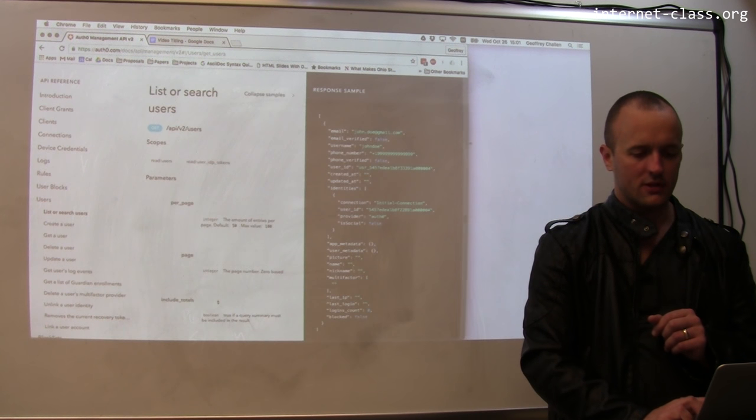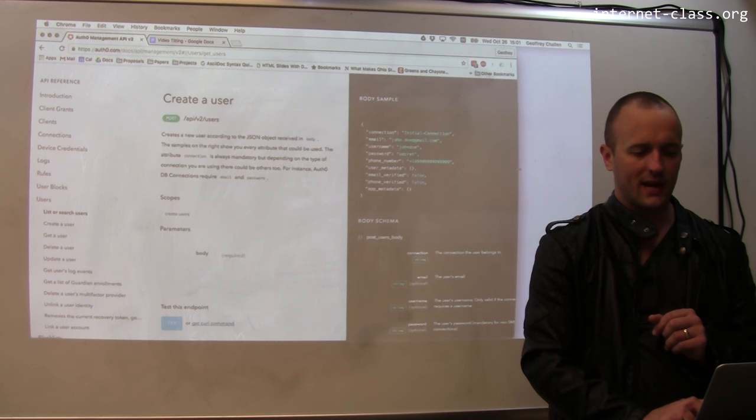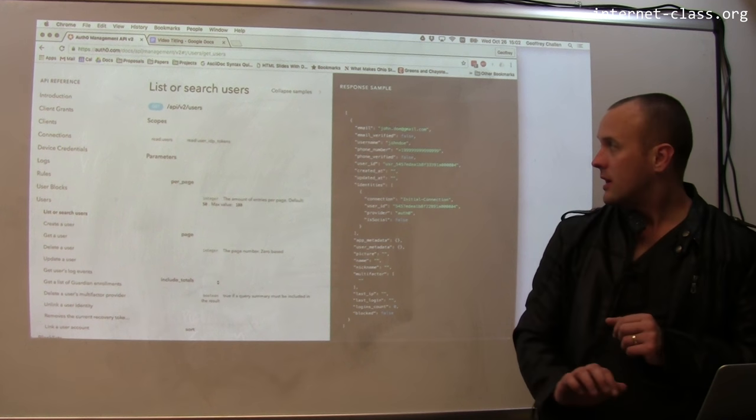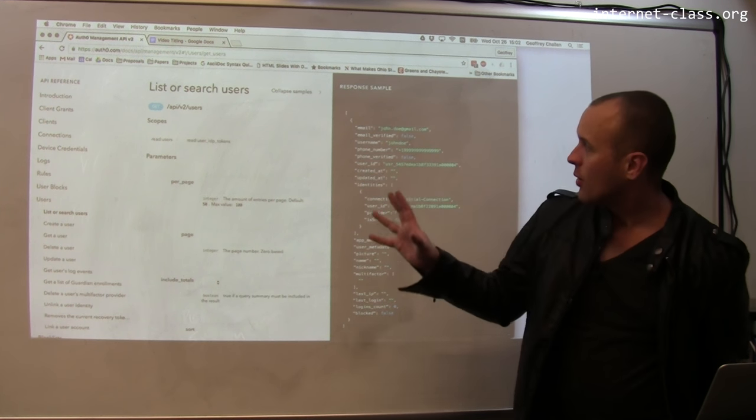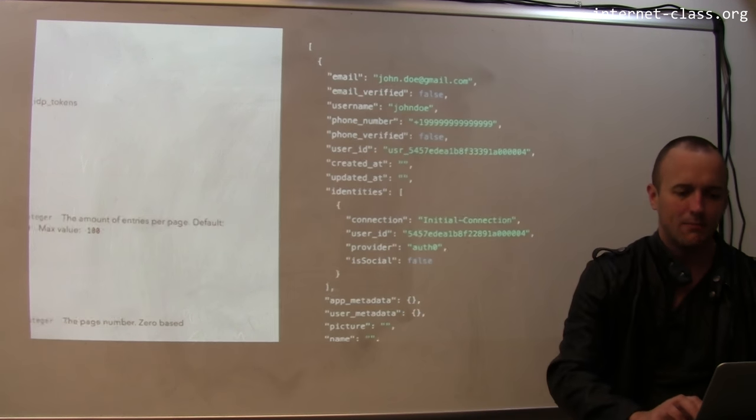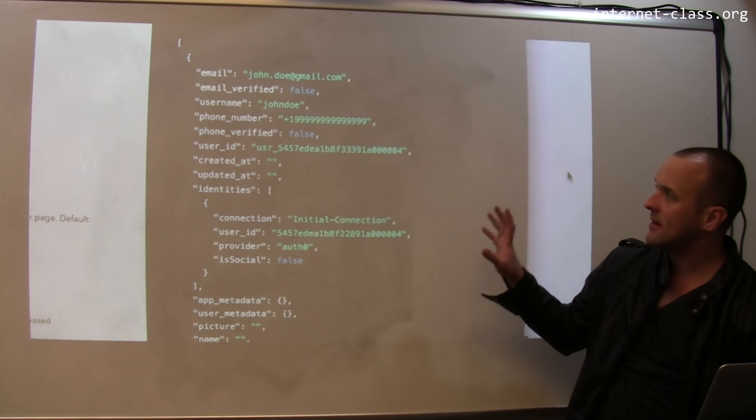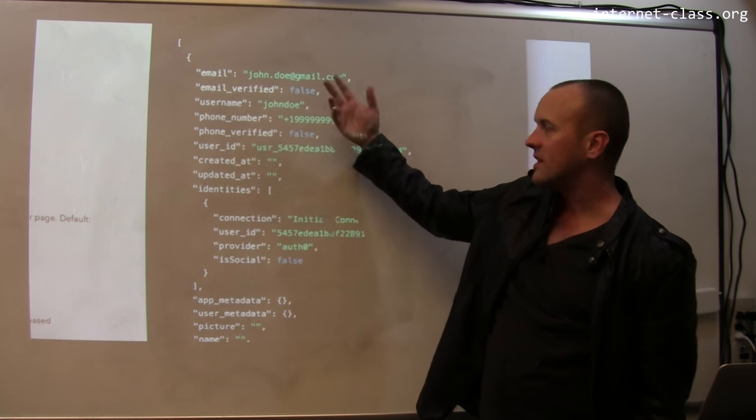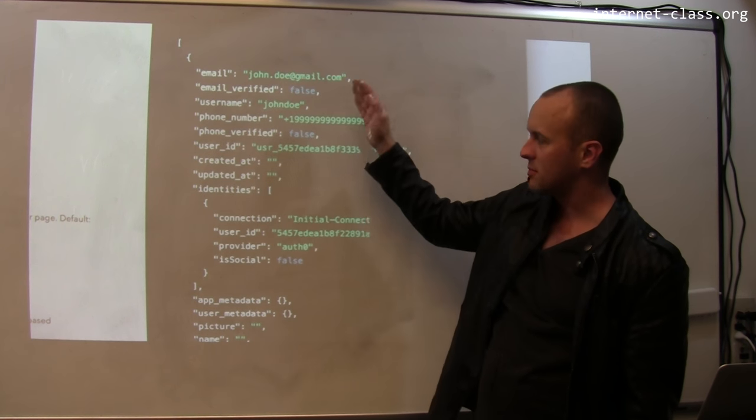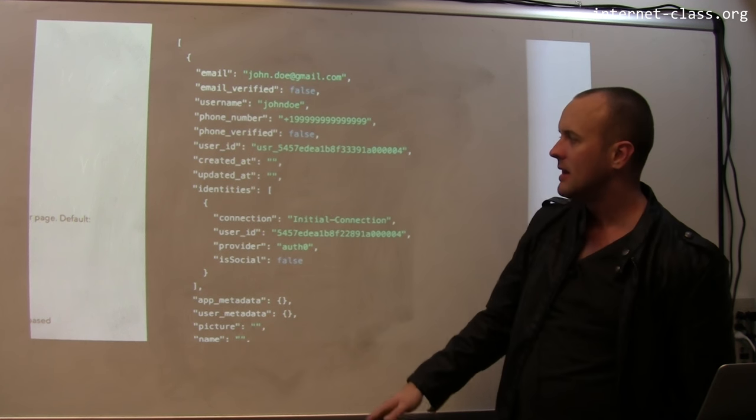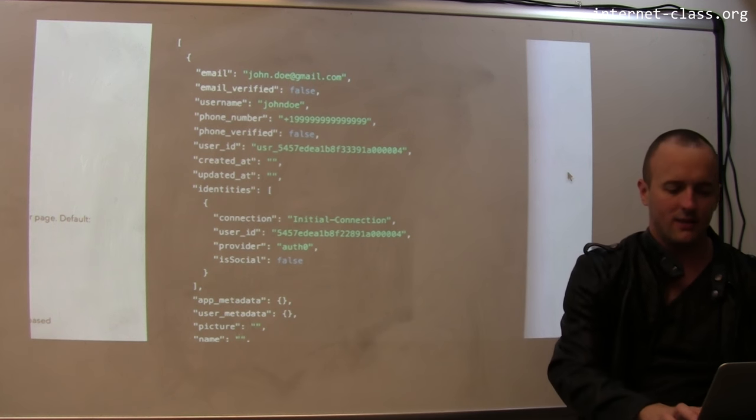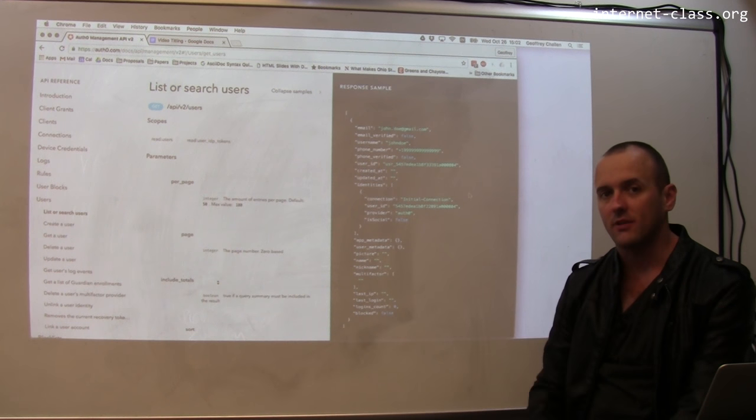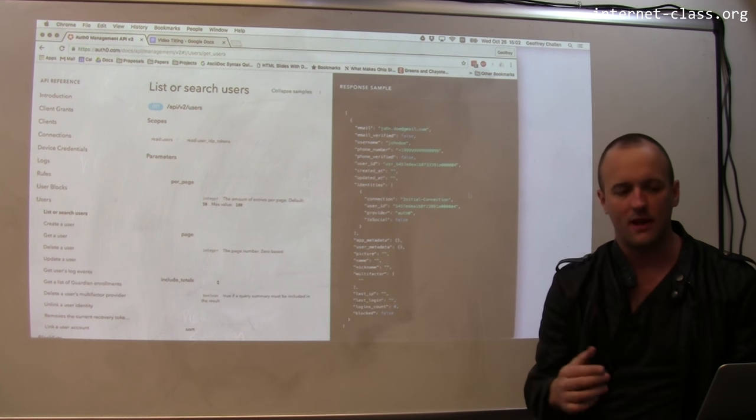So and then of course the question is what do I get back? So this is very common over here. Sorry, this is create a user. Let me go back to list or search users. So rather than returning HTML, what do I get back from this web interface? I get back JSON. So this is a JSON object. You can see it's a list of user objects. And then the user object has all these different fields on it. For example, the email, the email's been verified, username. Maybe I set some of these, maybe I didn't. And so I would get back a JSON array of user objects with information about the users matching the query that I've issued.